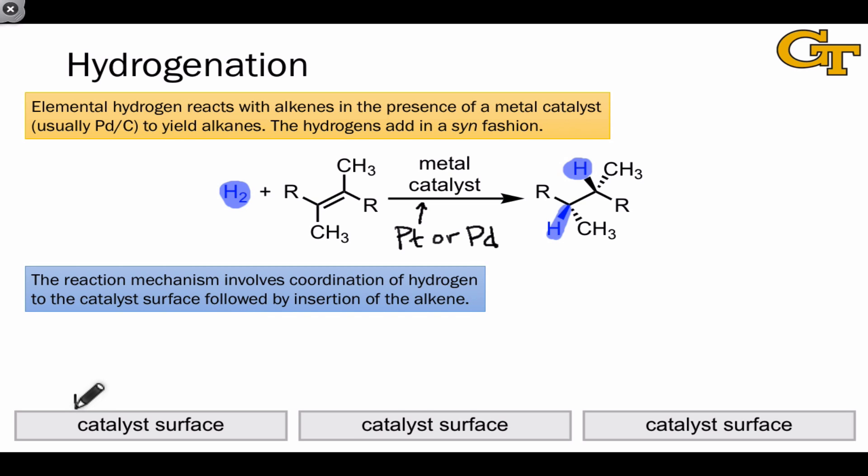In the first step of the mechanism, hydrogen coordinates to the catalyst surface. To show how this works, I've drawn a couple of platinum atoms in black and the hydrogen molecule in blue. The metal donates a pair of electrons to one of the hydrogen atoms, and the HH bonding electrons are used to form a bond to the other platinum atom. The net result here is that two new platinum-H bonds have formed.